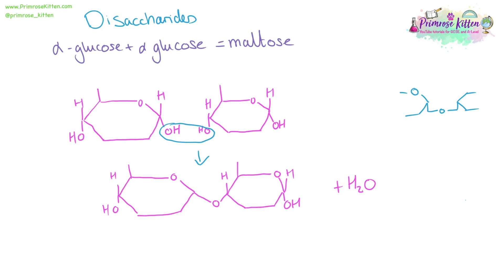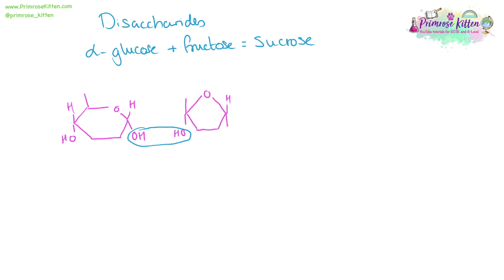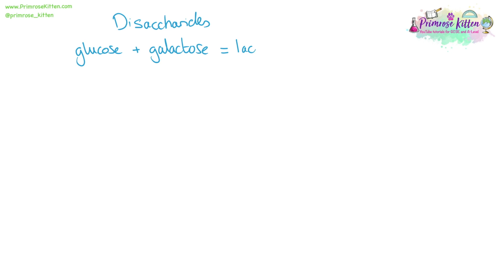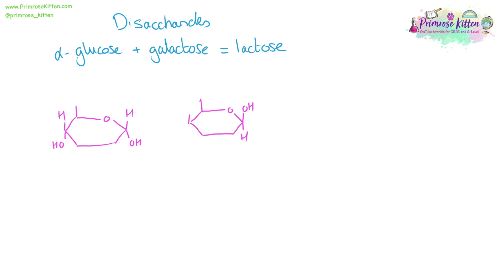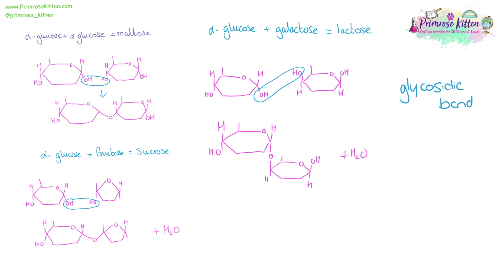A compound of water also comes out of this reaction. Alpha glucose and fructose will give us sucrose, with the bond formed between the OH group on alpha glucose and the OH group on fructose, forming sucrose and releasing water. Alpha glucose and galactose give us lactose, where one OH group goes down and one goes up — a slightly different orientation — but it still gives us a disaccharide and water. In all of these, the bond between the two monosaccharides is a glycosidic bond, highlighted here in blue.